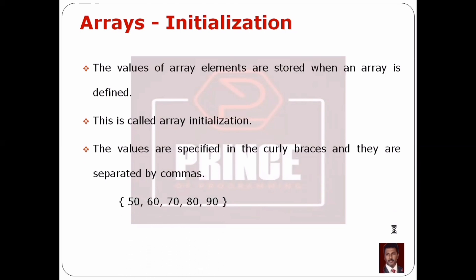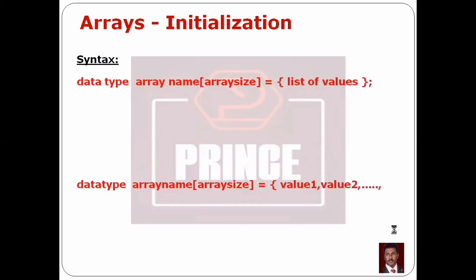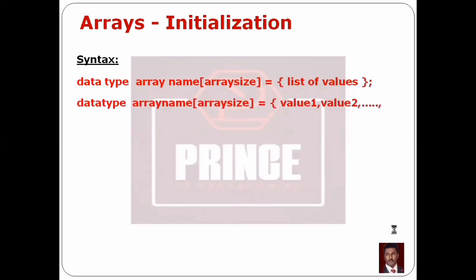For example, when we initialize values in an array, we add values in the curly braces. The syntax is: data type, followed by an array name, then square brackets with the array size, then the assignment operator (equal to symbol), then curly braces containing the values separated by commas — value1, value2, next value, and so on.